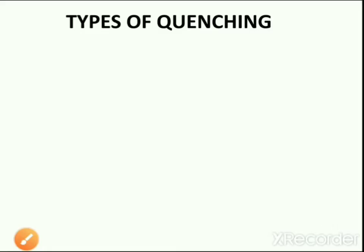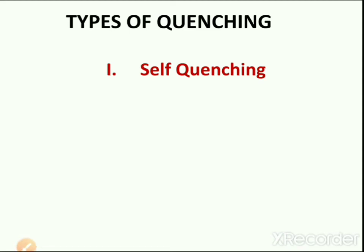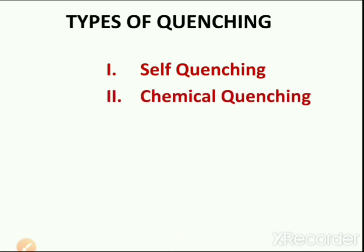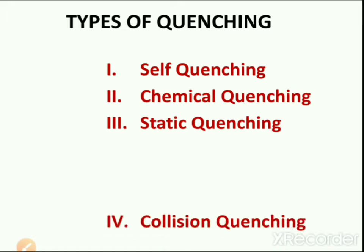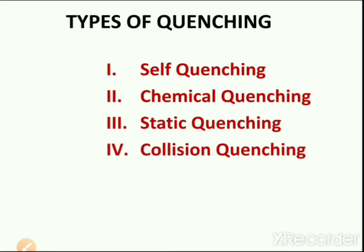Next are the types of quenching. There are four types of quenching: first, self quenching; second, chemical quenching; third, static quenching; and fourth, collisional quenching.